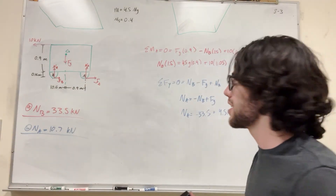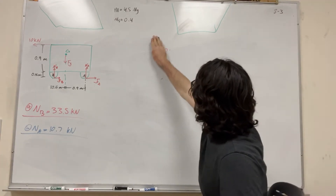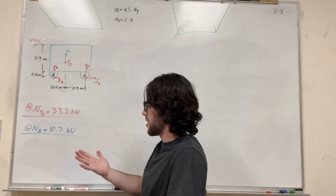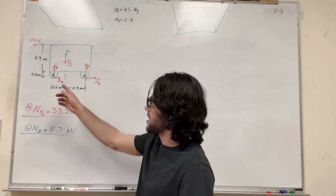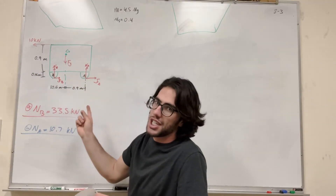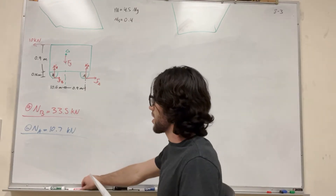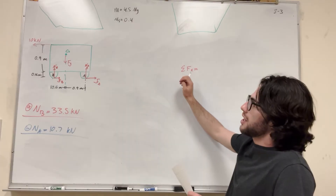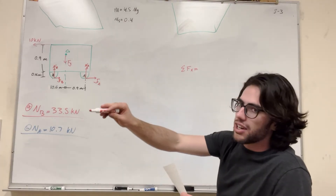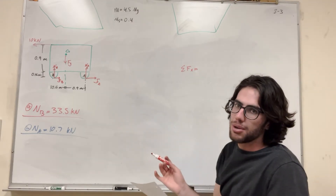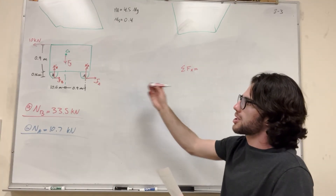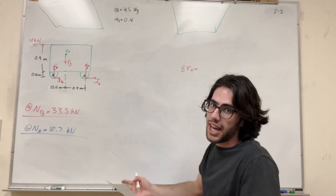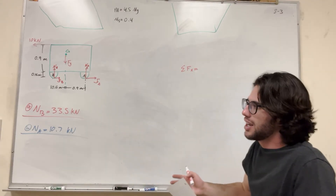Now we ask: does the cart move? Friction can only resist motion — it can't cause the cart to move. If the 10 kN applied force is greater than the total friction force, the cart moves; otherwise it doesn't. We take the sum of forces in the x direction. If the result is negative, the cart moves to the left; if positive, friction is greater than the applied force and the cart stays put.